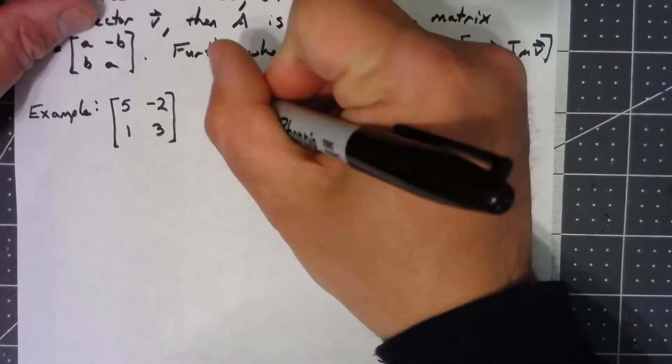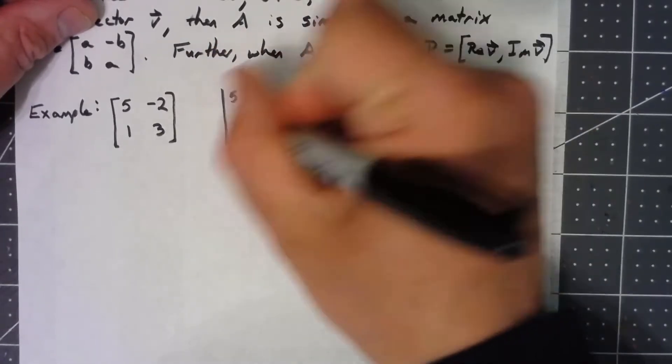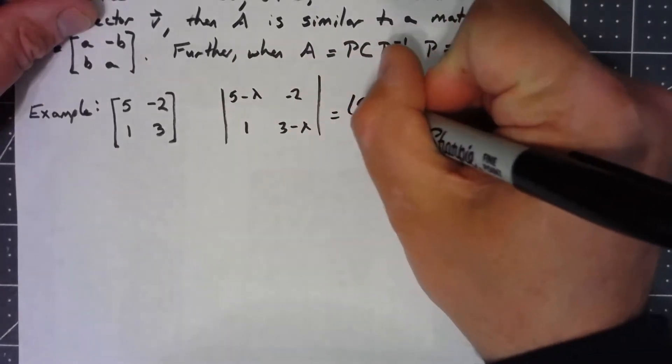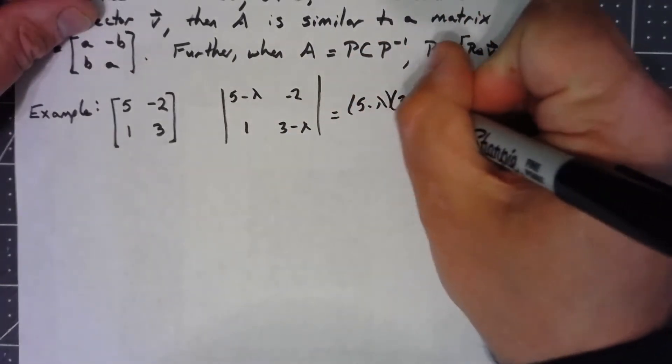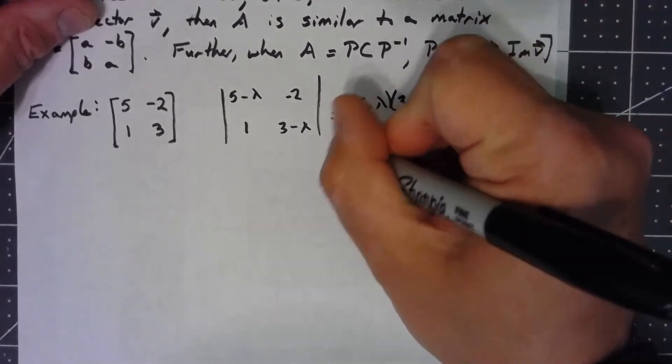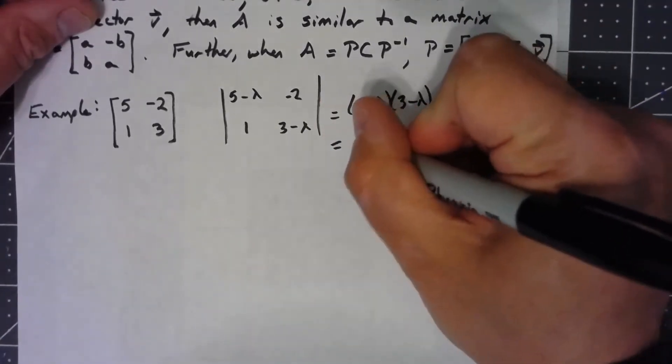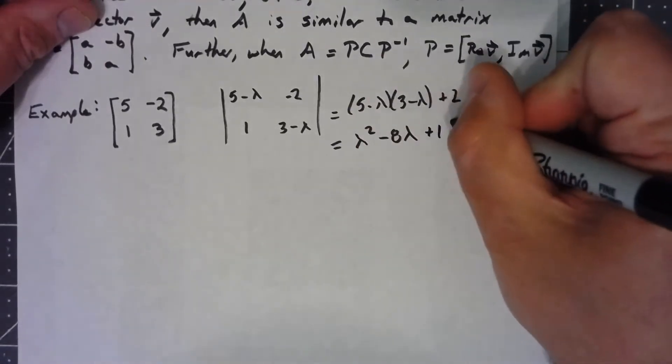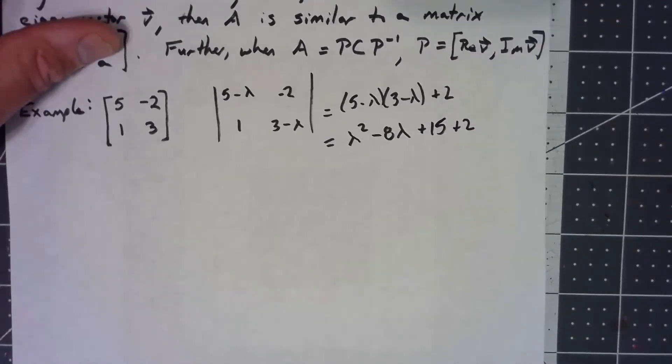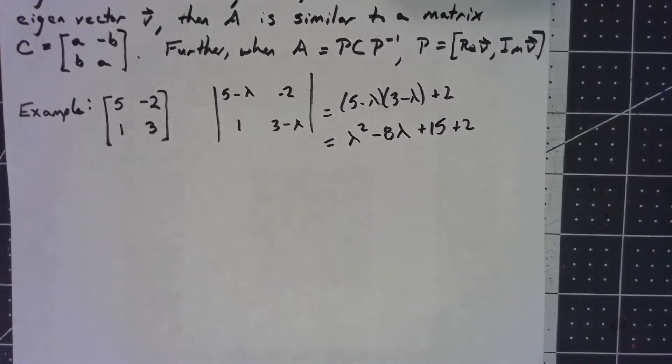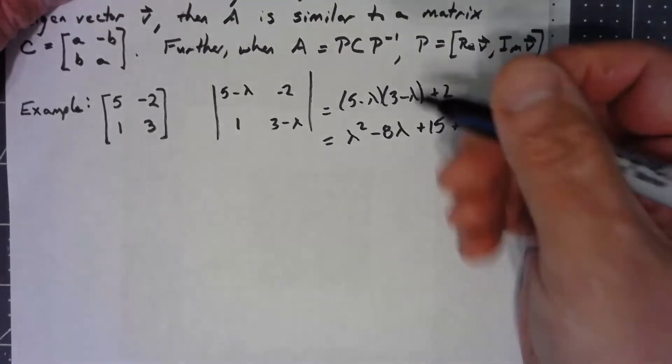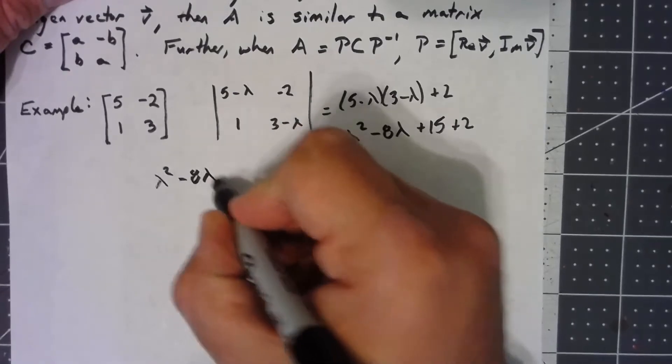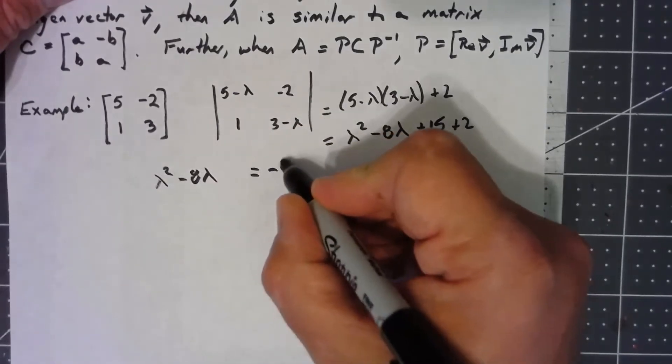So I'm going to take the determinant of [5-λ, -2; 1, 3-λ], which is going to be (5-λ)(3-λ) + 2. So that would be λ² - 8λ + 15 + 2. So to figure out the eigenvalues, we're going to figure out where that's going to equal 0. So if λ² - 8λ equals -17.